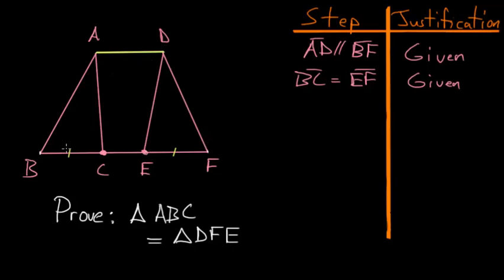...and we know that they have equal bases BC and EF, and they both end on this line AD which is parallel to their bases, then we can prove that these two triangles are equal to each other.